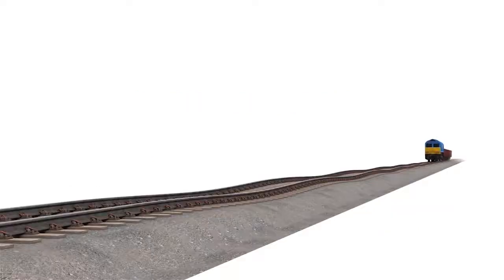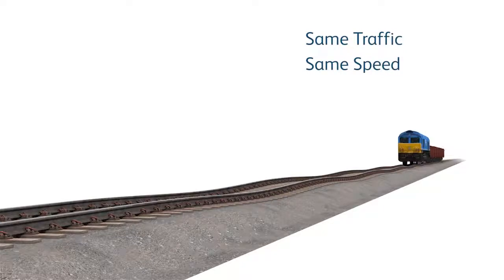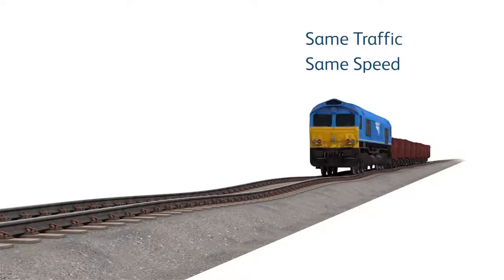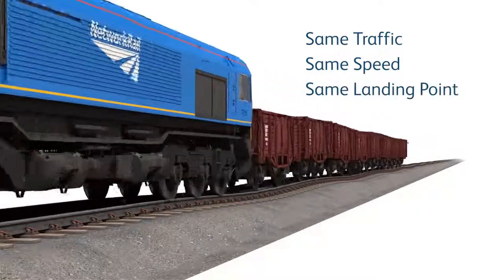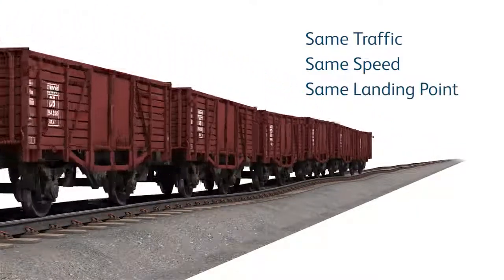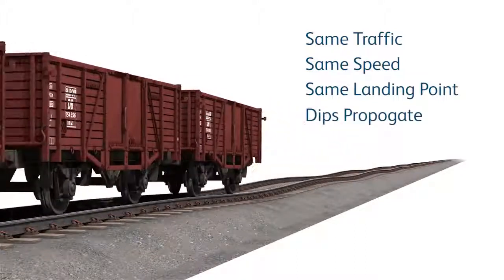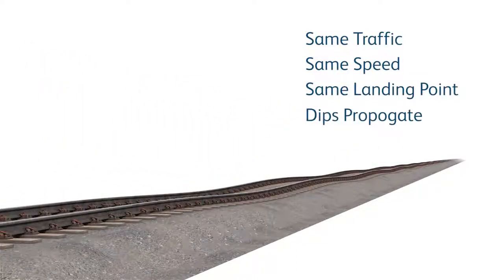Each section of track will have a predominant traffic type and vehicle speed. This means that a vehicle reacting to the trigger will generally land at the same point each time. Allowed to continue, the cyclic top will propagate and worsen, making the dips deeper and the number of dips increase.